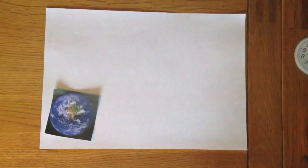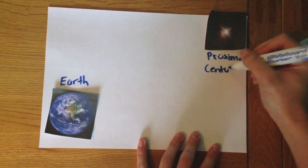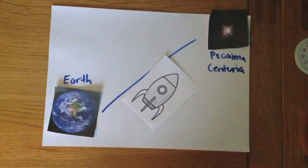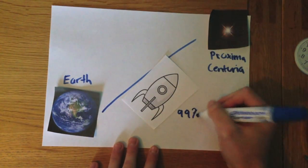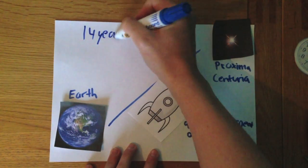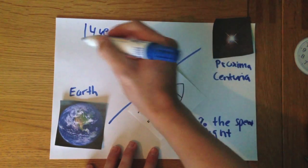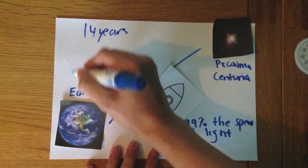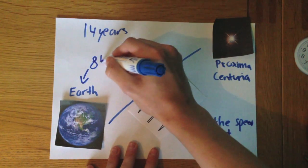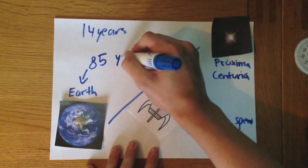We will leave you with a mind-boggling fact. If you travelled from Earth to Proxima Centauri, a neighbouring galaxy, on a spaceship at 99% the speed of light, it would take you 14 years. However, for everyone else who stayed on Earth, 85 years would have passed.